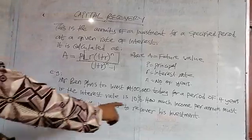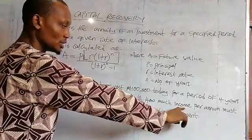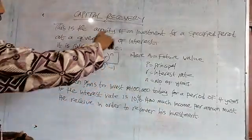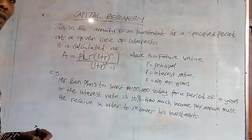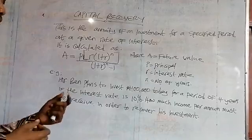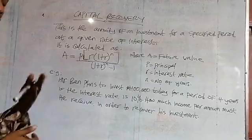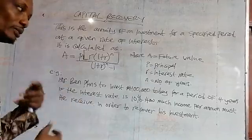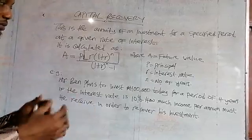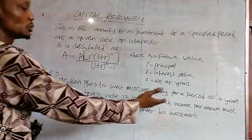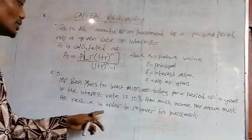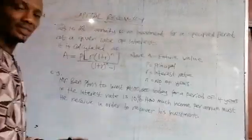The question asks: how much income per annum must he receive? You can see annuity is covered there — what must he be receiving per annum? We know annuity to be a receipt or payment received or made during a period of time.